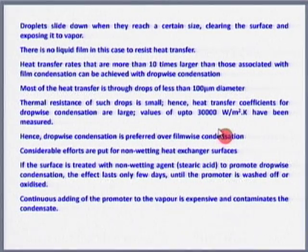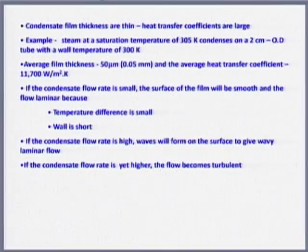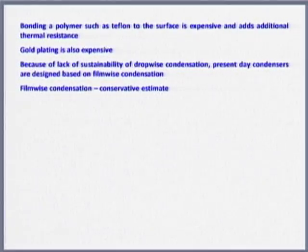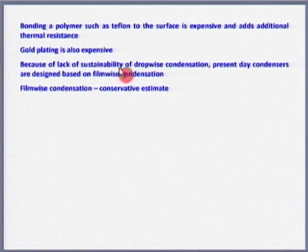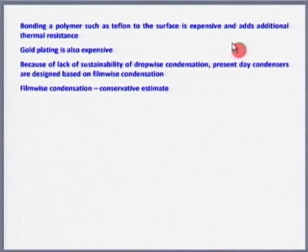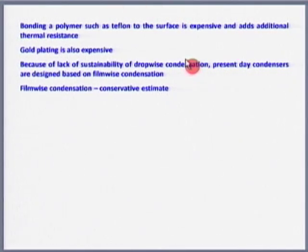It is better to design the condenser on the basis of film condensation so that it is a conservative estimate initially, and subsequently film condensation will take over. The main problem in dropwise condensation is sustainability — we cannot sustain it for long. Eventually dropwise condensation transits into film condensation because of wettability. Teflon coating gives dropwise condensation, but the coating vanishes. In fact, there are thousands of patents only on coatings to maintain dropwise condensation as opposed to film condensation.